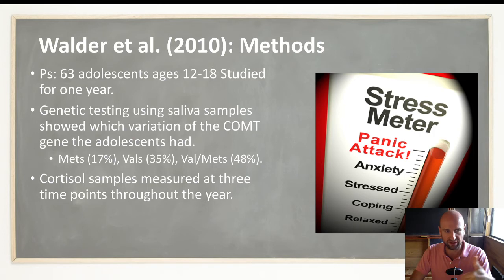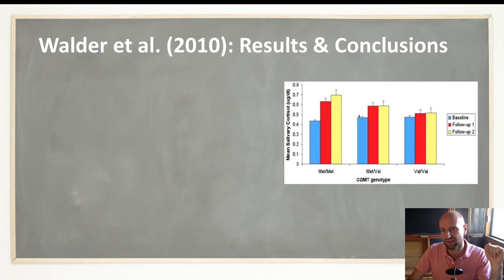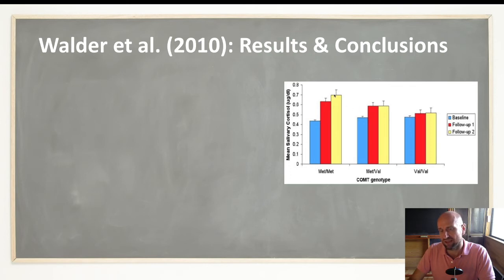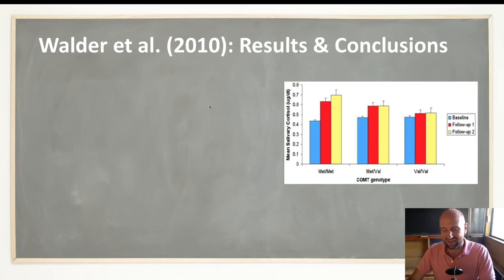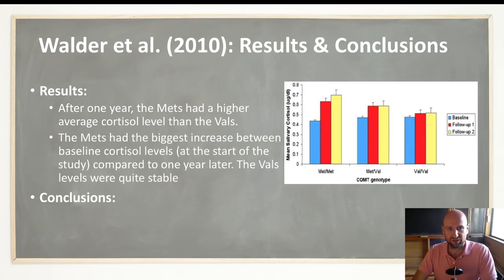They measured cortisol — the stress hormone released when stressed — at three different time points throughout the year. Comparing the Mets to the Vals, they had a higher increase in mean salivary cortisol. At baseline the levels were similar, but there was a much bigger increase over the year for the Mets, suggesting they were put under more stress — a common finding as stress tends to increase through adolescence. The Met/Mets had the highest cortisol levels by the end of the study. The Val/Mets and Val/Vals showed a more stable, consistent level. This is simple evidence supporting the warrior-worrier hypothesis: 12-to-18-year-olds with the Met variant had higher average cortisol levels than the Vals.